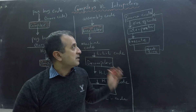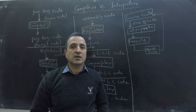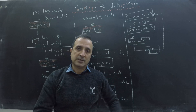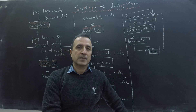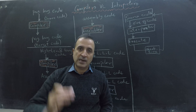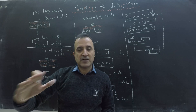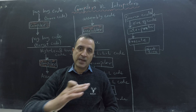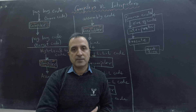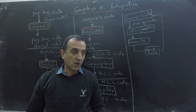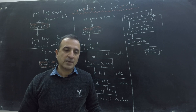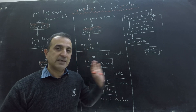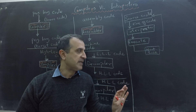So a compiler takes the whole code and translates it into target code. An interpreter takes line by line, different instructions, interprets them, and executes them in sequence. Now the important question: can we compare interpreters and compilers? Which one is better and when?